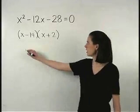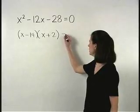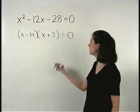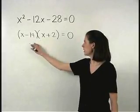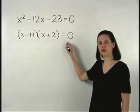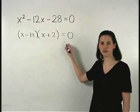So we have x minus 14 times x plus 2 equals zero. And whenever two terms are multiplied together to equal zero, this means that either one or the other must equal zero.